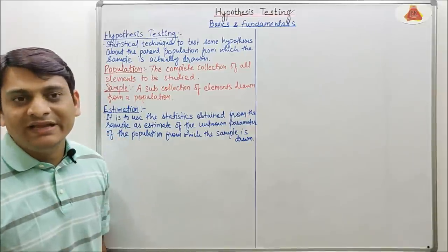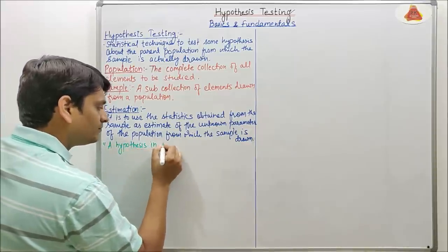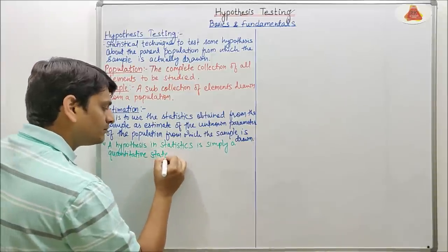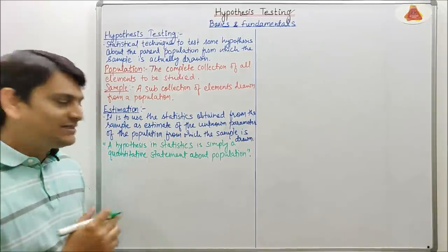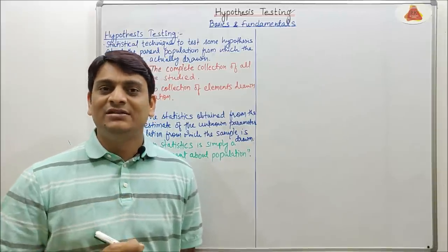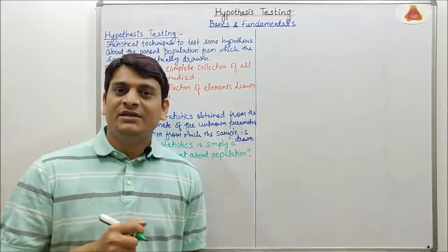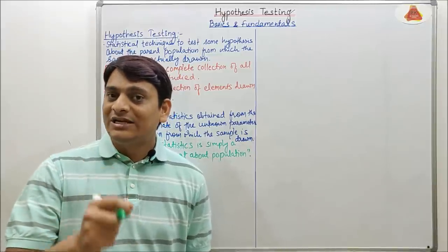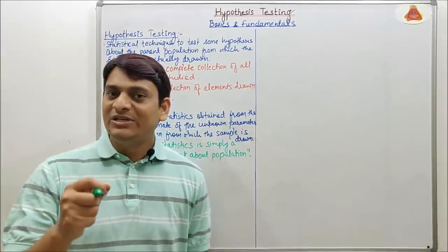In a more refined way, hypothesis testing can be defined as: a hypothesis in statistics is simply a quantitative statement about a population. Now coming to the procedure for testing the hypothesis, it is divided into five steps. First: set up the hypothesis. Second: set a suitable significance level. Third: set the test criterion. Fourth: computation. Fifth: making the decisions.